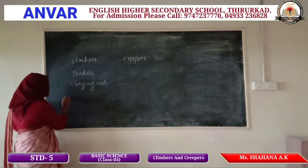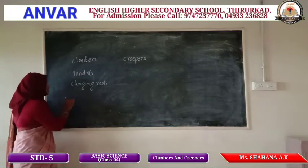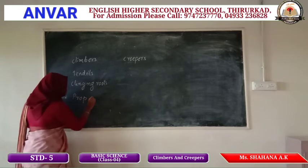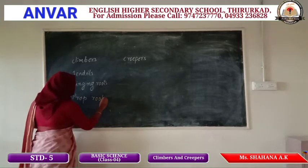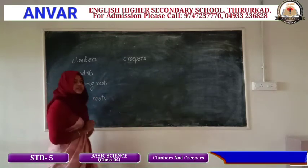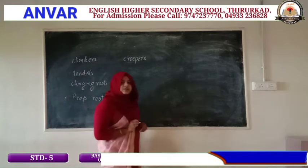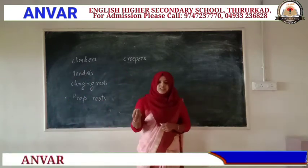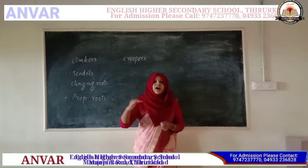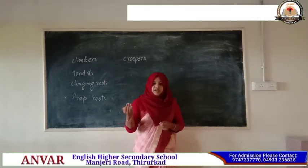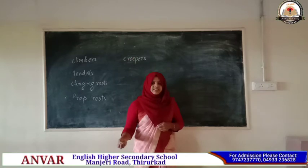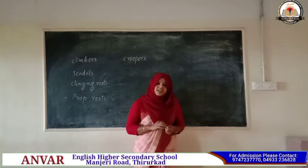Such type of roots are called prop roots. Prop roots are a special type of roots that can be observed out of the soil, arising from branches. The example is banyan tree.